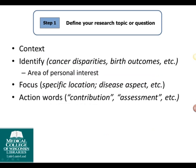Step 1: Define your research topic or question. These are some basic strategies for defining your research question. First of all, context is important. You need to understand the parameters you're working within, whether it's a specific assignment, providing information to colleagues, or writing an article for publication. The context influences how you might approach your topic and will help you think about the types of resources you'll need.